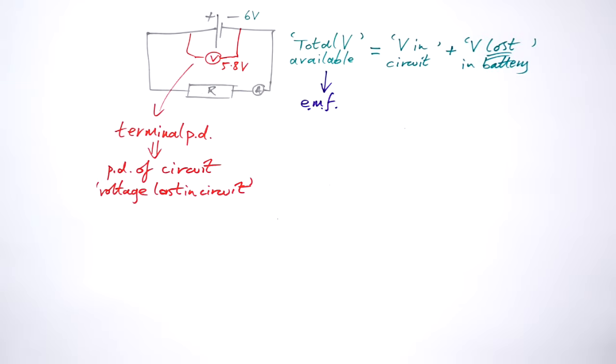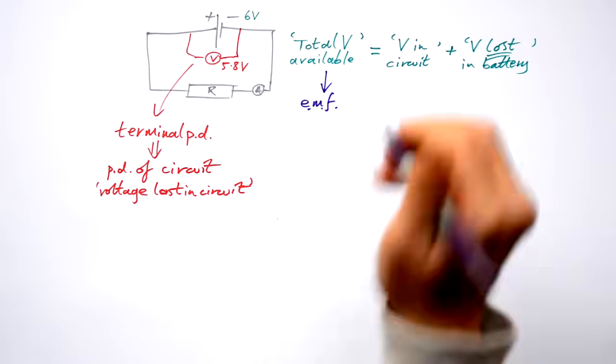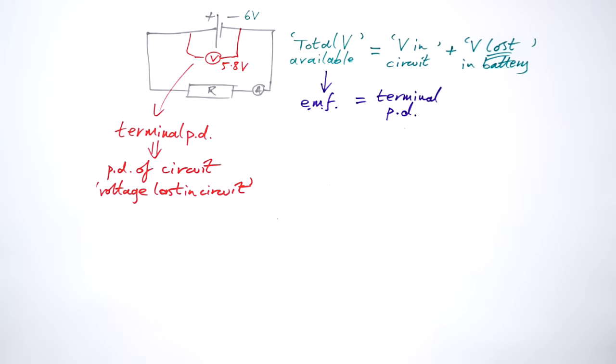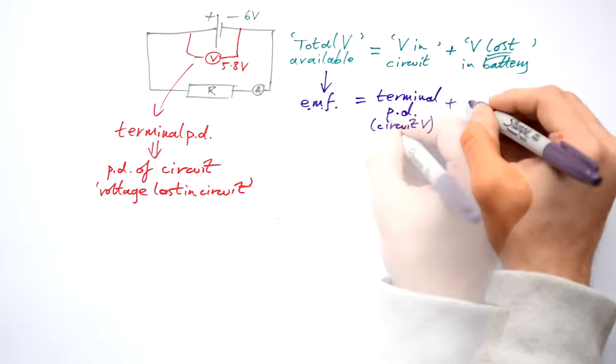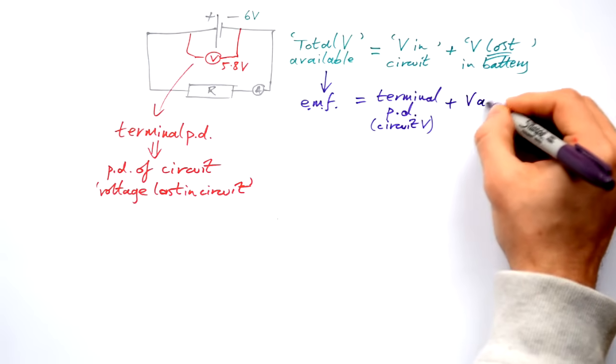That's the total energy supplied to each coulomb of charge by the battery. This is our terminal PD. That's our circuit voltage plus our V across the battery.